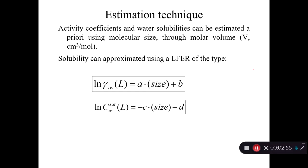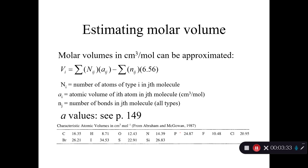For example, one of the techniques we could use to estimate water solubility would be to use the molecular size, expressed through molar volume. That would give us a linear free energy relationship. We could use this approach to do aqueous solubility — the hypothetical liquid solubility of the chemical as a function of the size of the chemical. This is Y = MX + B, where C is M, size is X, and D is the intercept.